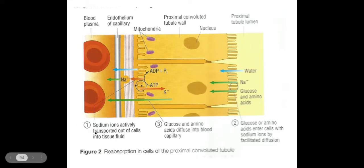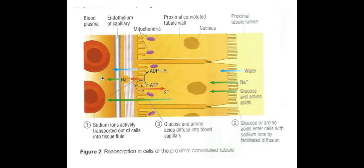In order to get glucose and amino acids back into the bloodstream, several processes occur. First, sodium ions are actively transported out of the proximal convoluted tubule wall cells into the bloodstream. This is active transport, so it requires ATP — meaning there will be a lot of mitochondria within these cells to provide ATP through aerobic respiration. Because sodium has been moved into the blood, water will also follow by osmosis, as shown by the blue arrow.